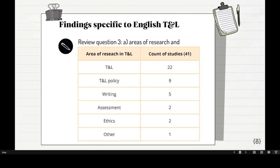For areas of research, in the 41 different studies, I classified them by category. General teaching and learning had about 22 papers. Teaching and learning policy specifically had nine. Then there were papers specifically on writing, specifically on assessment, specifically on ethics, and some others. So you can see the overall trend — most of them focus on general teaching and learning.